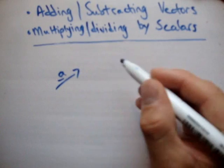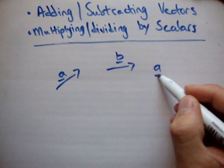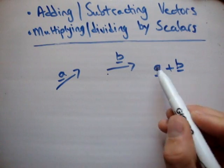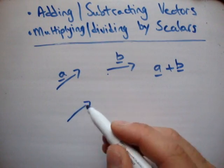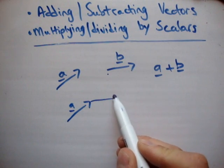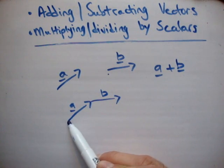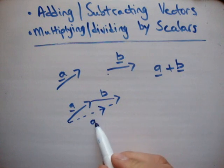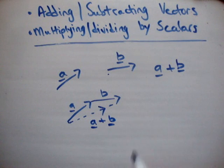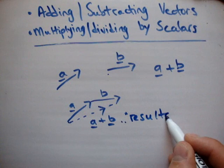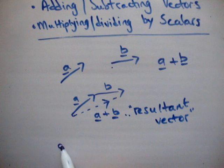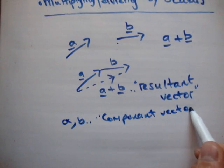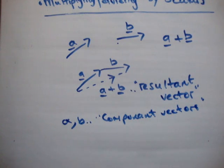So how do you do it? Say I have a vector a and a vector b. To add a plus b, you put the tail of the second vector on the head of the first. Remember, vectors can be moved around. So you put the tail of b on the head of a like that, and you draw from the tail of the first vector to the head of the second — that gives you the resultant vector a plus b. The vectors a and b are the component vectors, and the vector a plus b is the resultant vector.